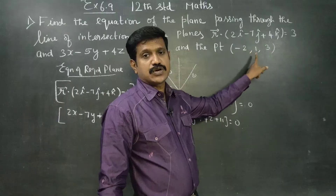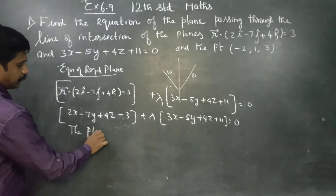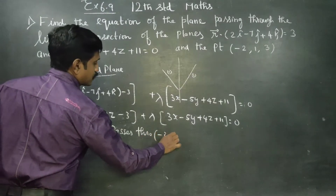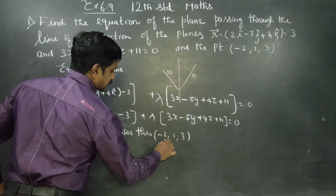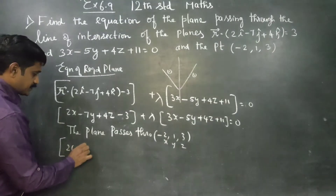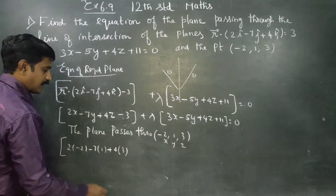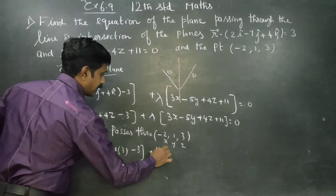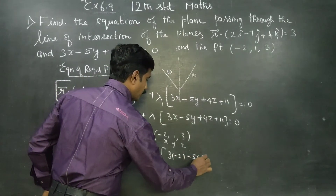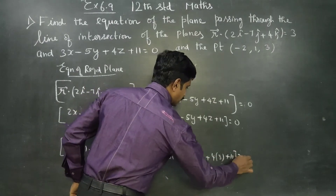The plane passes through minus 2, 1, 3. Substituting x, y, z: 2 times (minus 2) minus 7 times 1 plus 4 times 3 plus lambda into 3 times (minus 2) minus 5 times 1 plus 4 times 3 plus 11 is equal to 0.